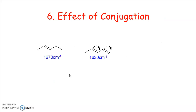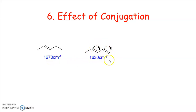Conjugation also has an effect on the IR band. Conjugation of a double bond provides single-bond character through resonance, which lowers the frequency of vibration. The carbon-carbon double bond gives an absorption band at 1670 cm⁻¹, but conjugation decreases the frequency towards 1630 cm⁻¹.